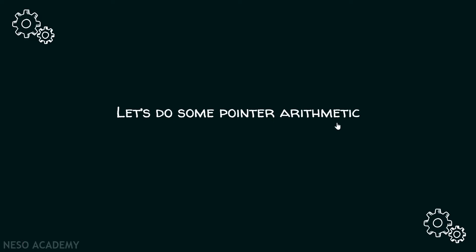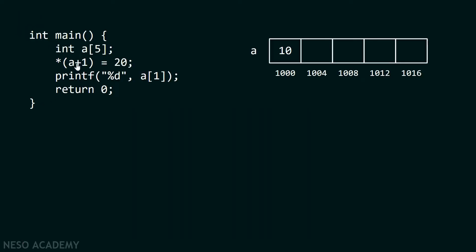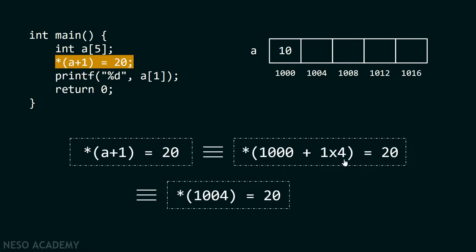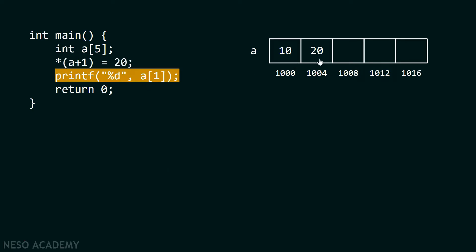Now let's do some pointer arithmetic. I have changed the line to *(a + 1) instead of *a, and I am assigning 20 to it. *(a + 1) means *(1000 + 1 × 4), because 'a' represents the base address 1000 and we must multiply by 4 since an integer occupies 4 bytes. After addition, we get address 1004, which represents the second location. With the dereference operator, I can store value 20 there, and printf will print 20 on the screen.